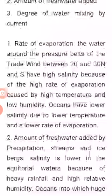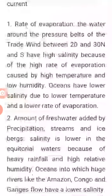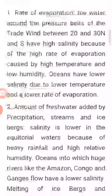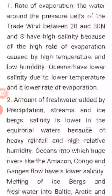Now let's look at the different factors that affect the salinity of the ocean. Rate of evaporation: The water around the pressure belt of the trade winds, between 20 to 30 degrees north and south, has high salinity because of the high rate of evaporation caused by high temperature and low humidity.